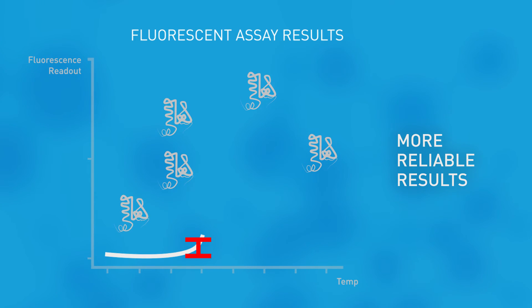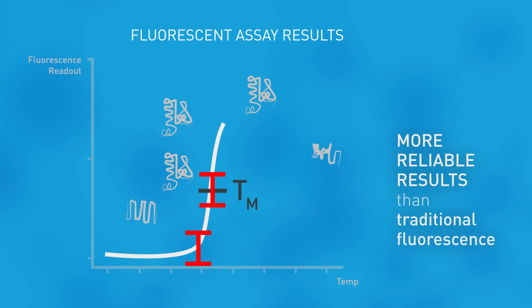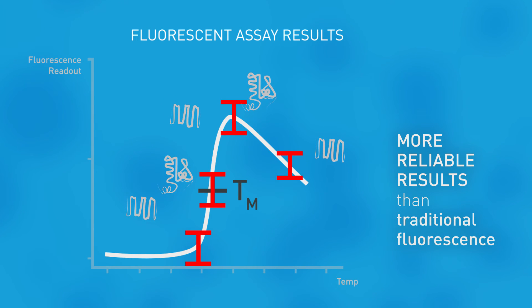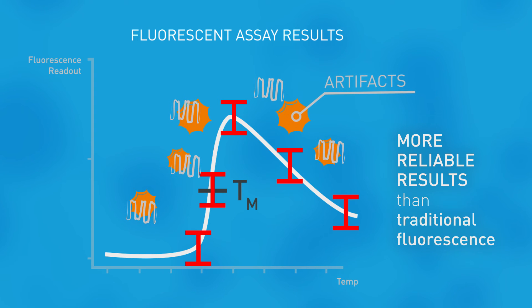DSC is more reliable than TM measurements from intrinsic or extrinsic fluorescence, which frequently introduce unwanted artifacts or unexpected TM shifts.